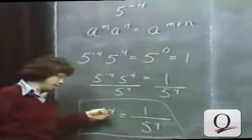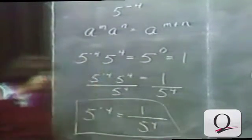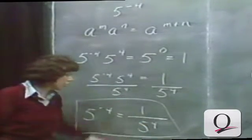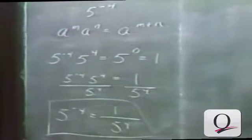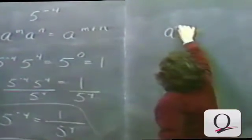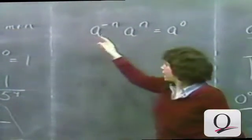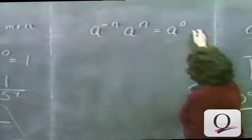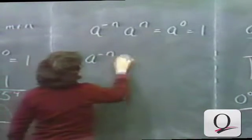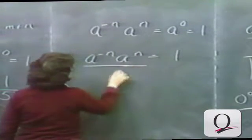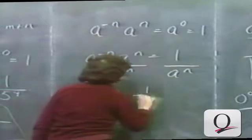When you have a negative number exponent like this, you can take the reciprocal — the same base to the positive power. 5 to the minus 4 is 1 over 5 to the 4 power. There is nothing special about the number 5. In general, a to the minus n times a to the n is a to the minus n plus n, or a to the 0, which is 1. So a to the minus n times a to the n equals 1, and dividing both sides by a to the n, we get that a to the minus n is 1 over a to the n.